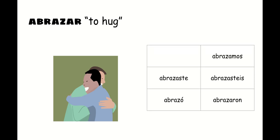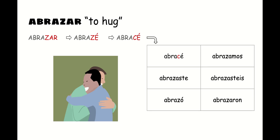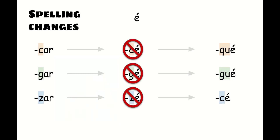Finally, abrazar is an example of a verb that ends in -zar. You can conjugate all forms except the yo form normally with the regular preterite -ar endings. However, to make the yo form, you take off the -ar, add the -é, but since we have a 'z' next to an 'e', we need to change that 'z' into a 'c', giving us 'abracé' — I hugged. So in summary, when conjugating preterite verbs that end in -car, -gar, or -zar, you can't just add the -é ending; you also have to change the 'c' to q-u, the 'g' to g-u, and the 'z' to a 'c'.